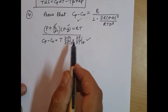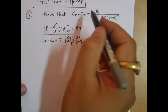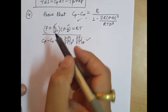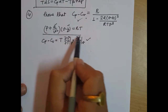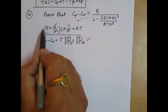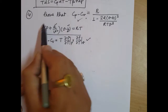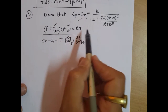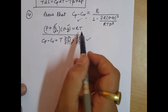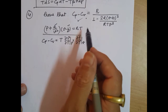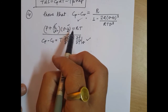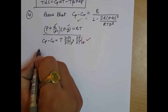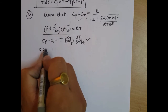Now, to bring this expression, we have to first differentiate the Van der Waals gas equation with respect to temperature, keeping pressure constant. At another time, we have to differentiate it with respect to temperature, keeping volume constant. Let us start by keeping volume constant.